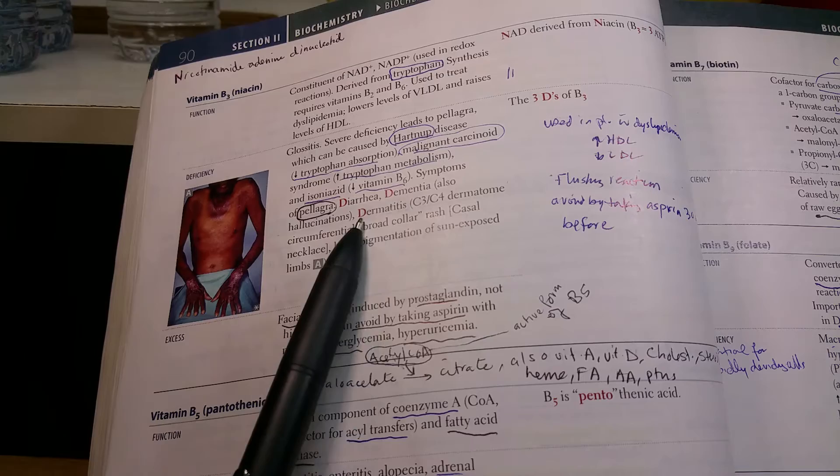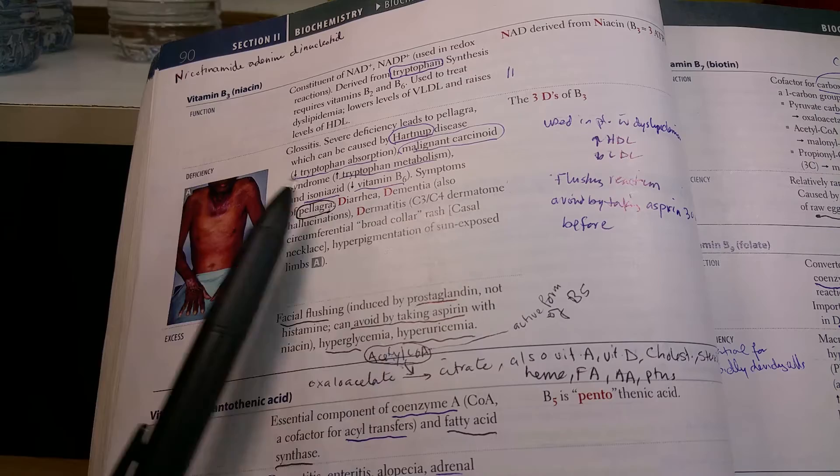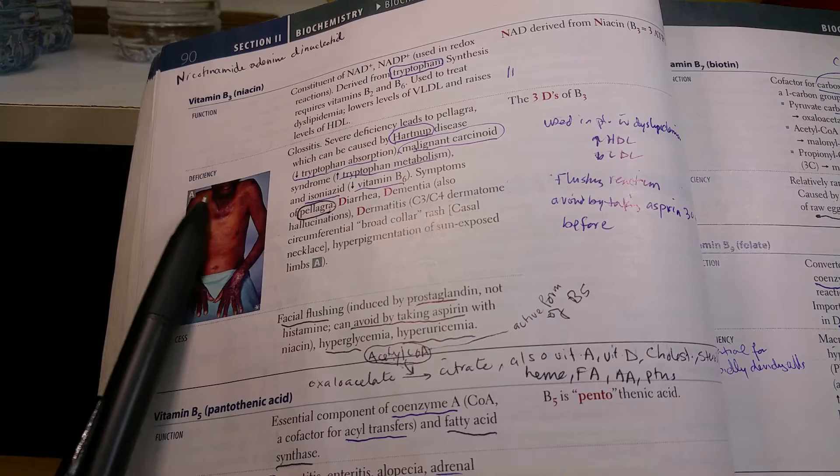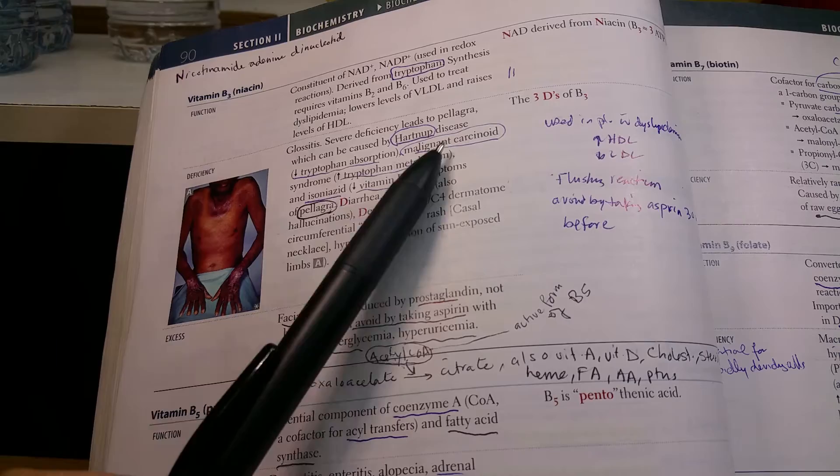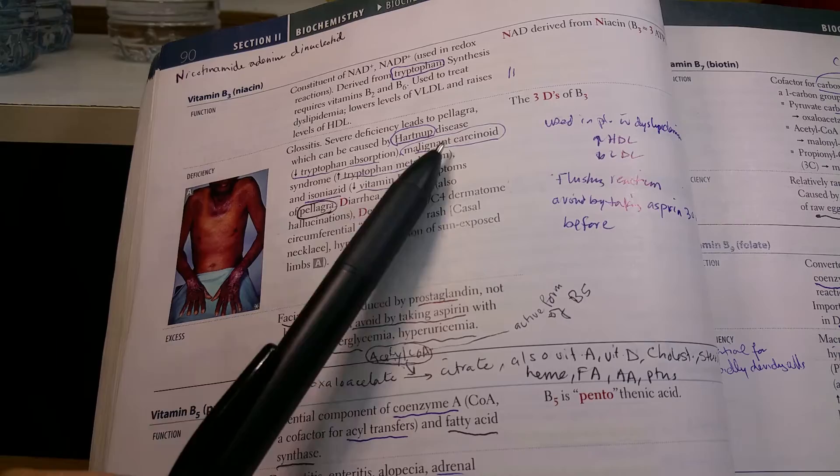In the deficiency, one of the very classical things that happens is pellagra: the three D's - diarrhea, dermatitis, and dementia. The dermatitis happens in sun-exposed areas, mostly in the collar distribution and other sun-exposed areas.